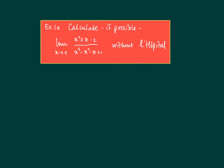Exercise 1a. Calculate, if possible, the limit from x to 1 of x squared plus x minus 2 over x cubed minus x squared minus x plus 1 without the use of L'Hôpital's rule.